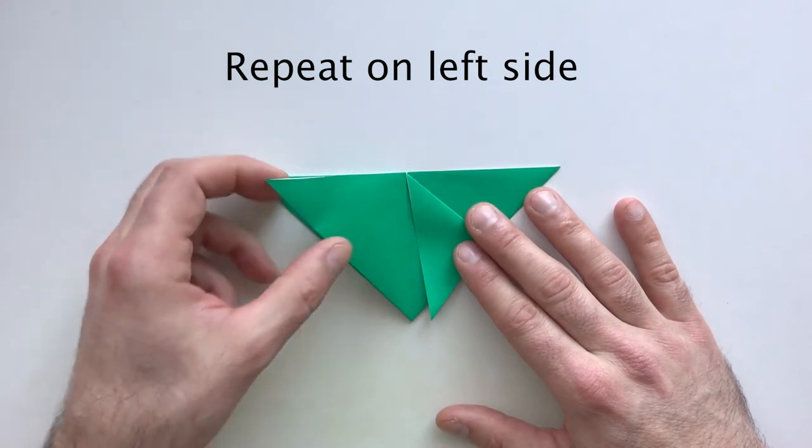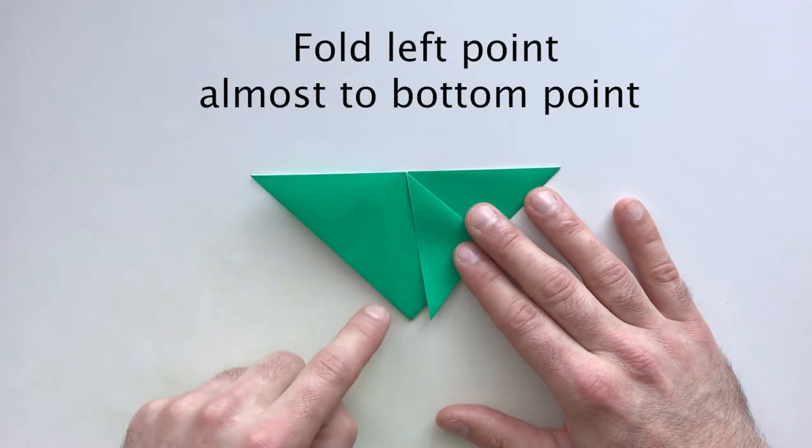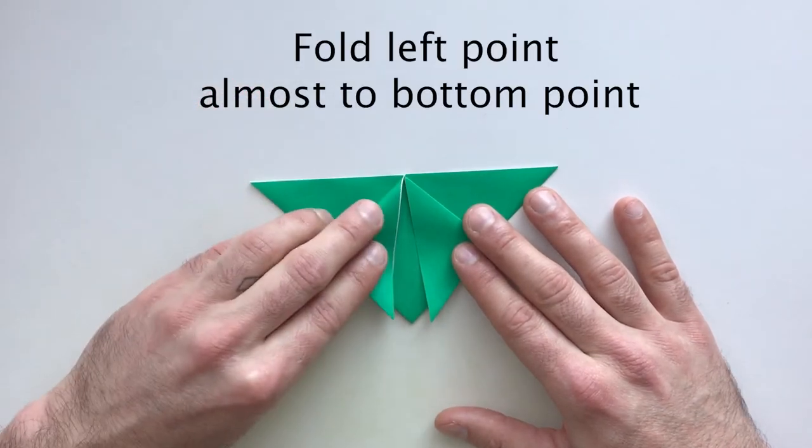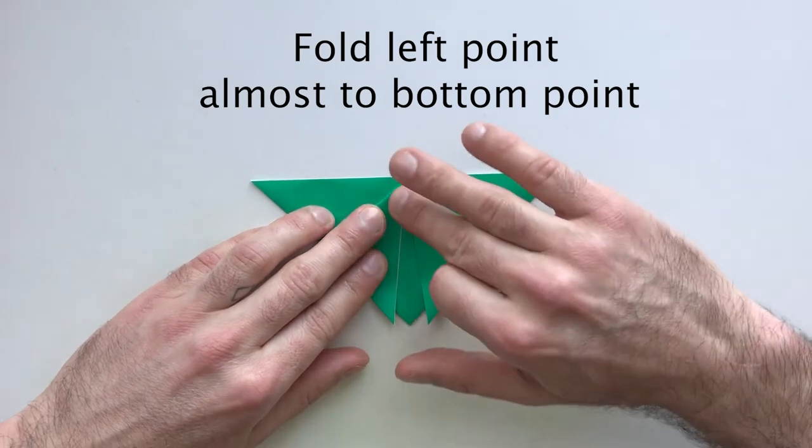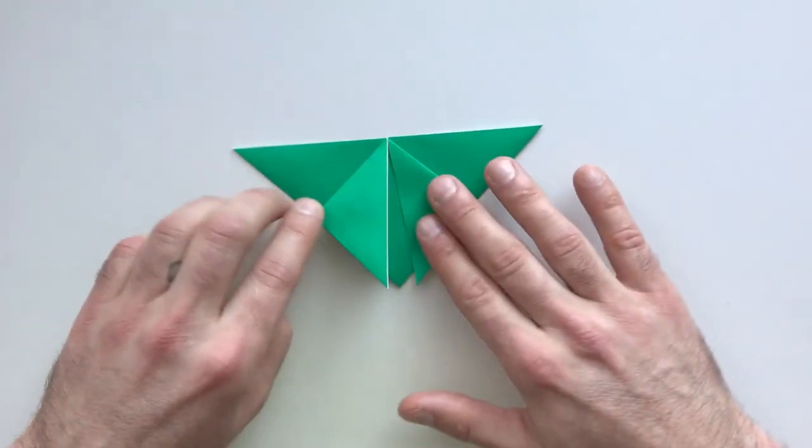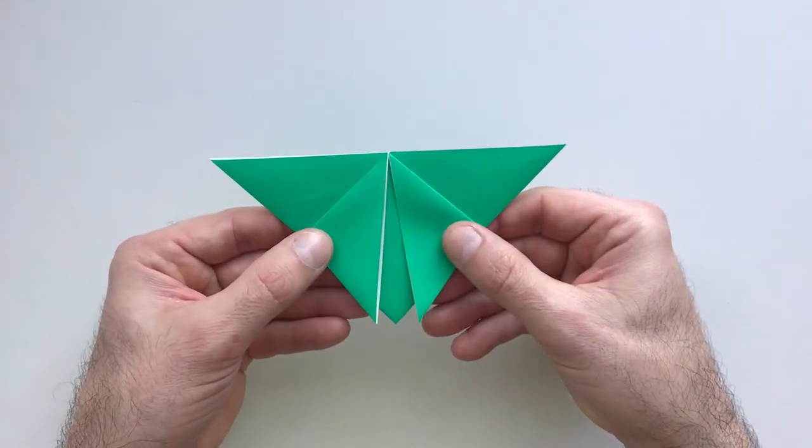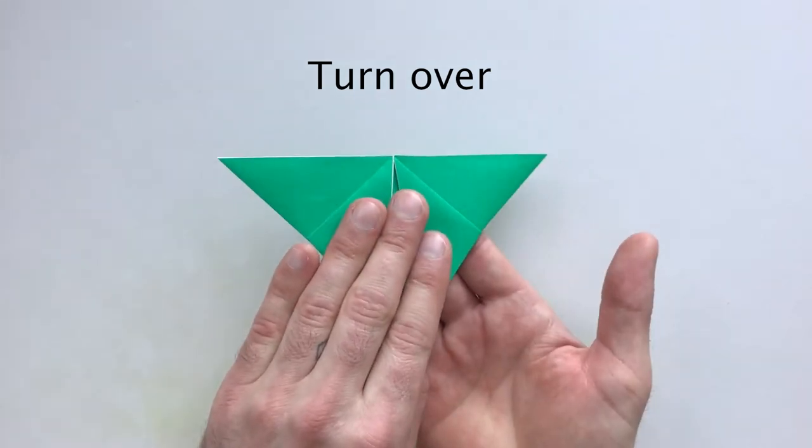So just the top piece of paper - fold that point almost down to the center line and crease. Now turn the paper over.